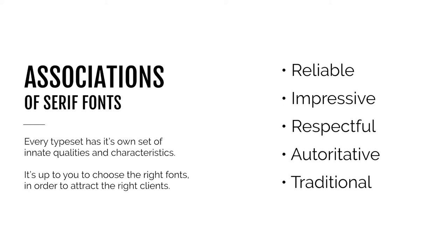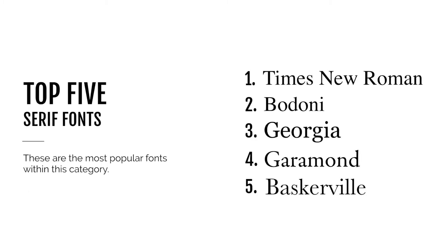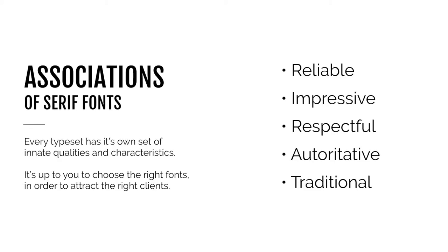The top five serif fonts you can get started with are: Times New Roman, Bodoni — one of my ultimate favorites, especially in all caps — Georgia, Garamond — a really beautiful font — and Baskerville, which is awesome as well. These are the top five most popular serif fonts. Playing with their bold and italic qualities is always fun — serif fonts look really great as italics.